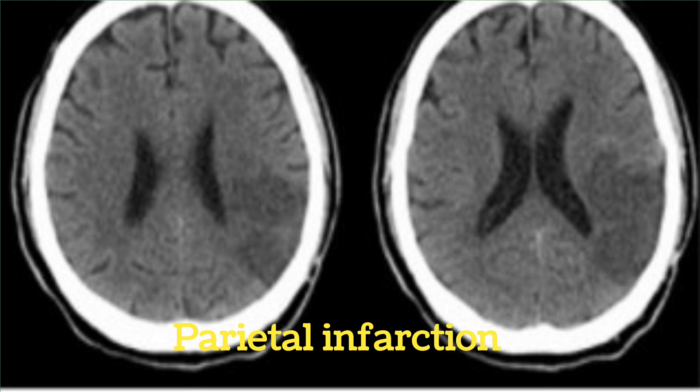This is the CT scan of a patient with Gerstmann Syndrome. As you can see the hypodensities in the posterior parietal lobes.